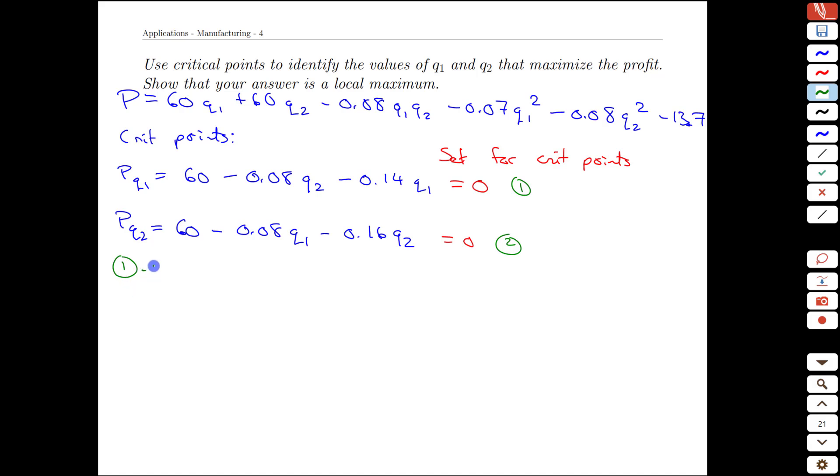If we take equation 1 minus equation 2, we'll get the 60s minus the 60s. You can think of this as a whole calculation adding this whole left-hand side and the whole right-hand side. So the right-hand side adds up to 0. Then we have minus 0.08 q2 minus minus 0.16 q2. And that will end up canceling. And we'll have 0.08 q2s left over. And we'll have negative 0.14 q1s, double negative plus 0.08. That will give us 0.06 q1s, but negative as the other term.